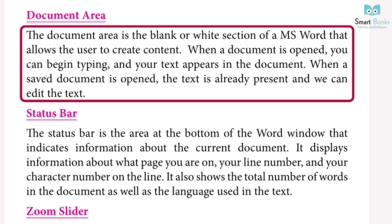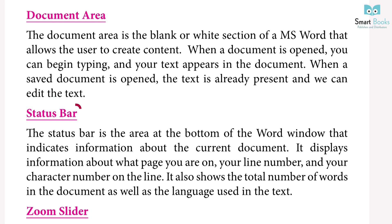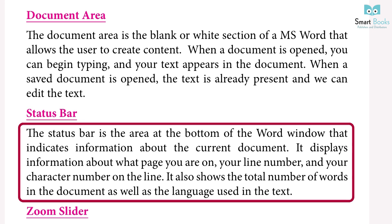Document Area: the document area is the blank or white section of MS Word that allows the user to create content. When a document is open, you can begin typing and your text appears in the document. When a saved document is opened, the text is already present and we can edit it. Status Bar: the status bar at the bottom of the Word window displays information about the current page number, line number, character number, total word count, and the language used.